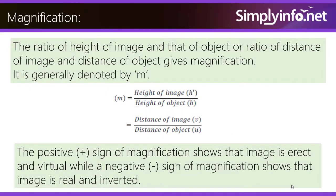Magnification: The ratio of height of image and that of object, or ratio of distance of image and distance of object, gives magnification. It is generally denoted by M. So M is equal to height of image H-dash by height of object H, which is equal to distance of image V by distance of object U.